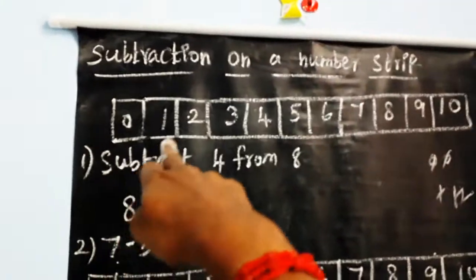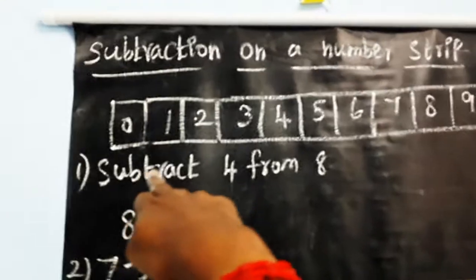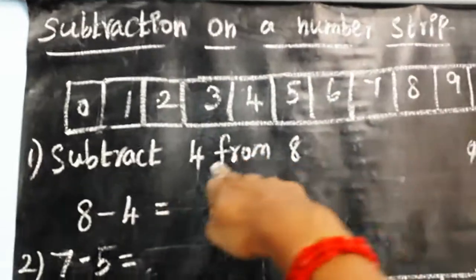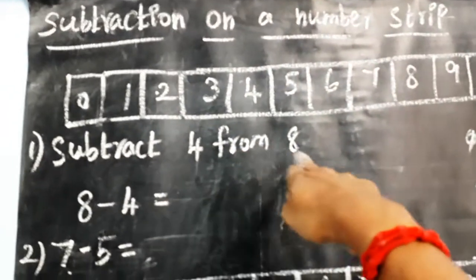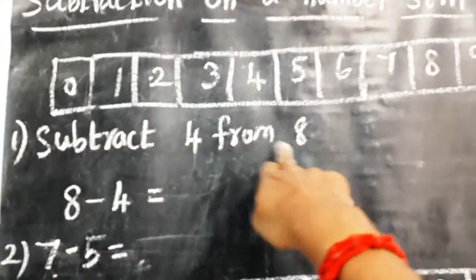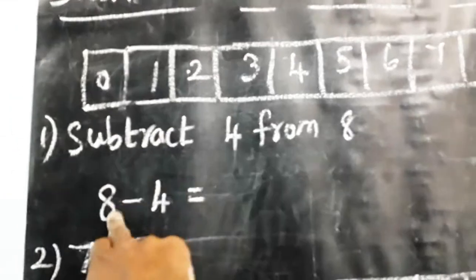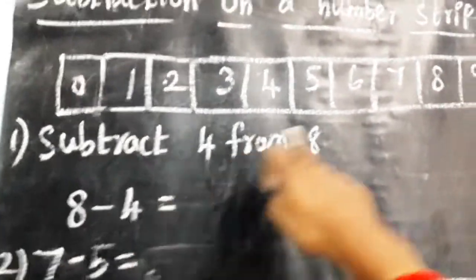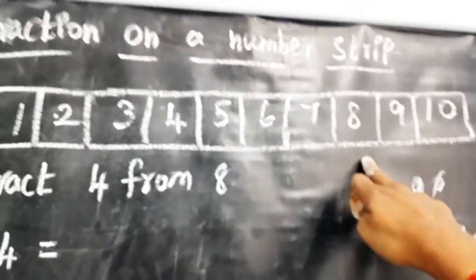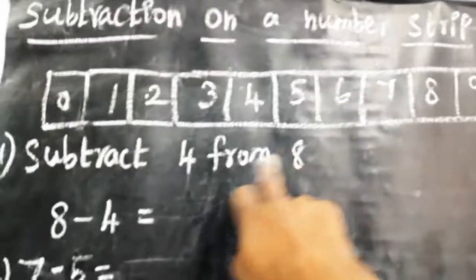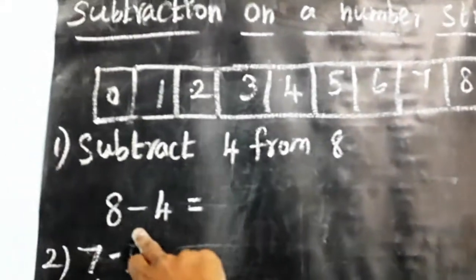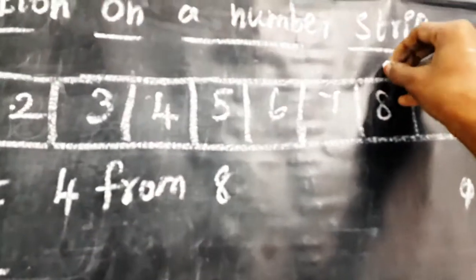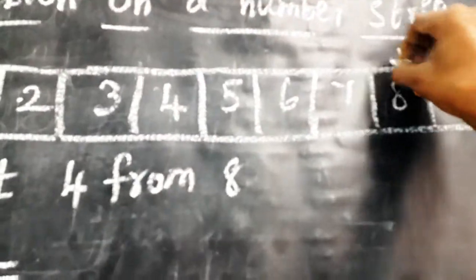Now look at: subtract four from eight. We have started from number eight. Subtract minus then four. We can start from which number? Children — yes, eight. So we have started from eight.